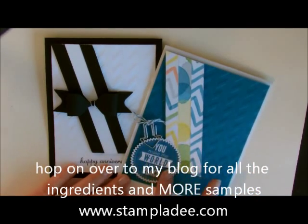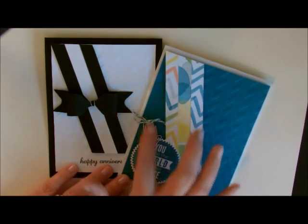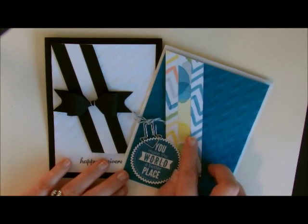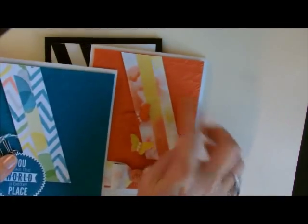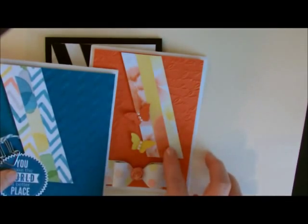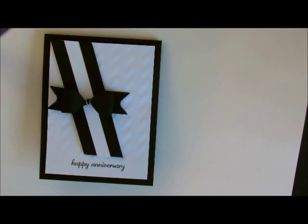This is done with the Starburst bundle. I added a few little embellishments, all coordinate. I used the Watercolor Wonder Designer Series Paper. On this one right here, I moved the little piece that I'm going to show you how to do. It's just kind of a focal point. Again, using a lot of embellishments.